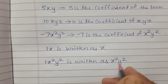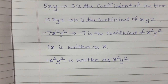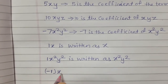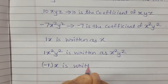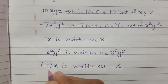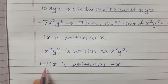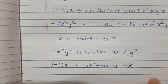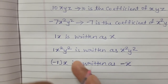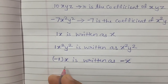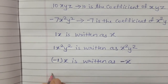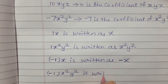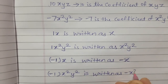Also, a coefficient of minus 1 is indicated only by the minus sign. So minus 1x is written as minus x, and minus 1 times x squared y squared is written as minus x squared y squared.